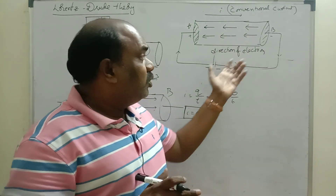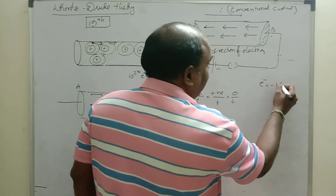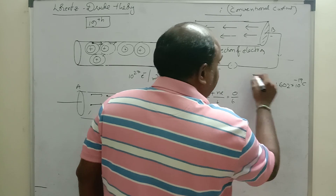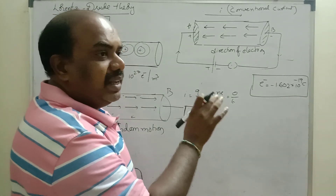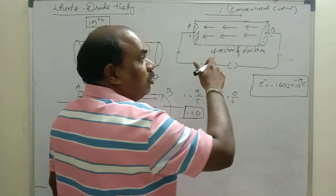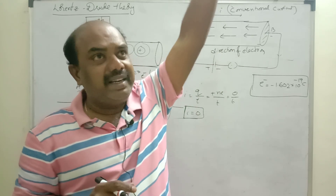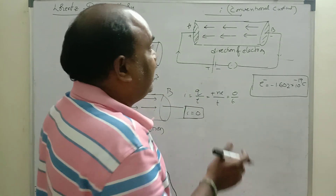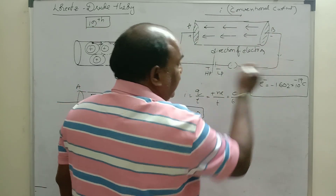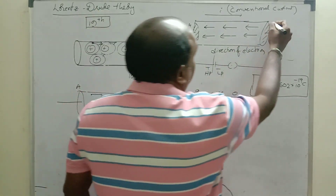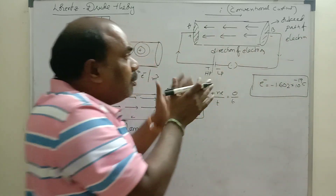If we consider electron current — electrons flow from battery negative to positive — each electron has a charge of minus 1.602 × 10 to the power minus 19 coulombs. In each and every derivation we would need to apply a minus sign, which is very difficult. So we do not consider current direction from negative to positive. Just as water flows from a higher level tank down to ground level, current flows from higher potential to lower potential — from battery positive to negative. This is conventional current.